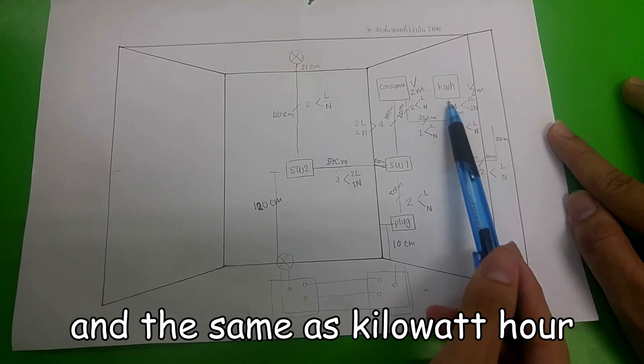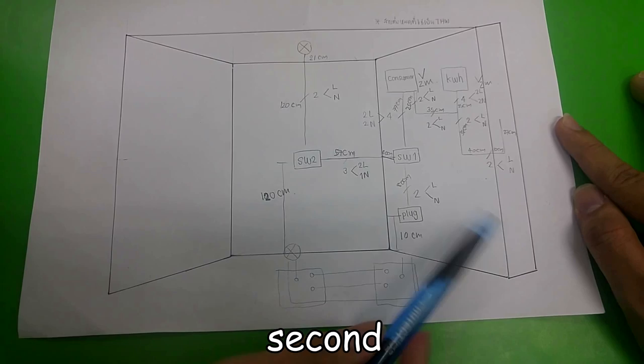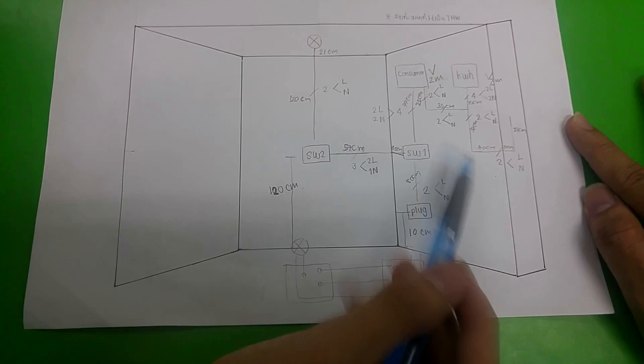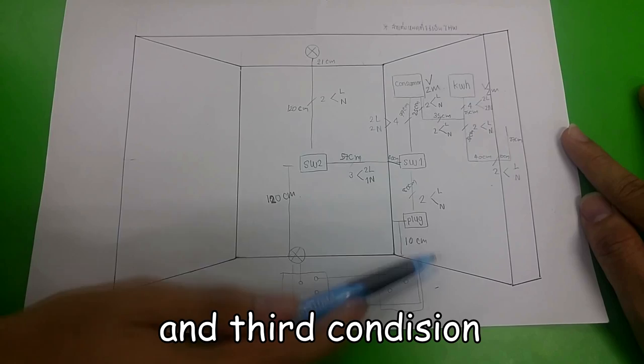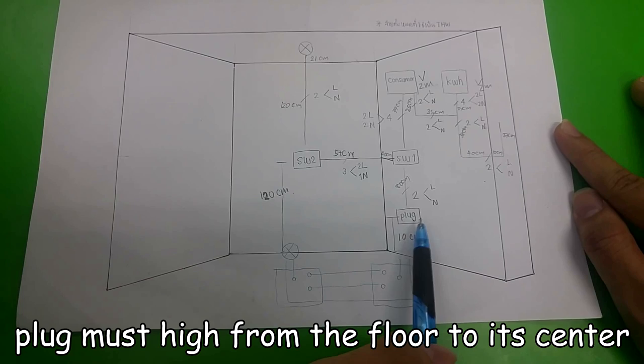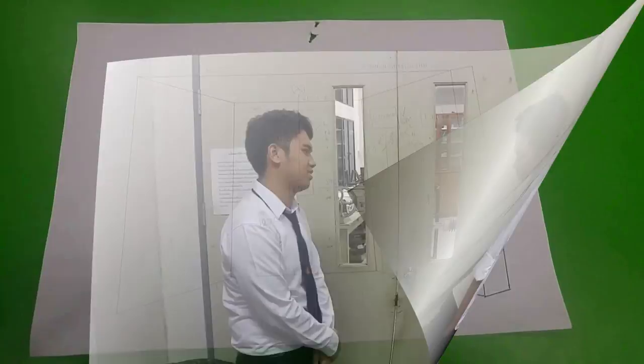Second step, we have conditions that must be followed. The first condition is the consumer must be two meters from the floor to its center, the same as the kilowatt meter. Second condition, the switch must be one hundred and twenty centimeters from the floor to its center. And third condition, the plug must be thirty centimeters from the floor to its center. After that, we can proceed. Thank you very much, Ken. No problem, Mendo.